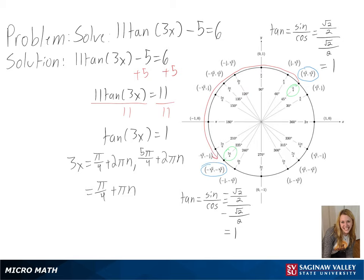Finally we need to get x by itself so we will divide both sides by 3, and we will get x equals pi over 12 plus pi n over 3 as our final answer.